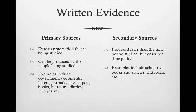There are three types of written evidence. The first is a primary source. Primary sources date to the time period that is being studied and can be produced by the people that we are studying. Some examples include government documents, letters, journals, newspapers, books, literature, diaries. Even something as mundane as receipts can give a historian a lot of history.